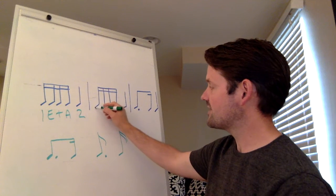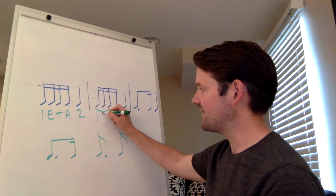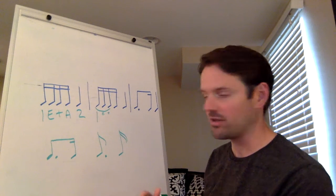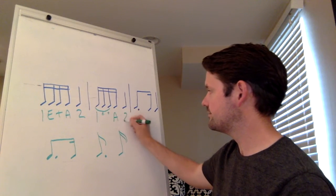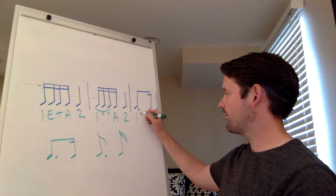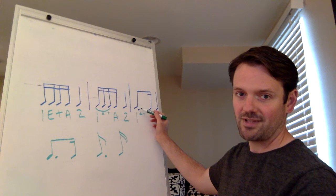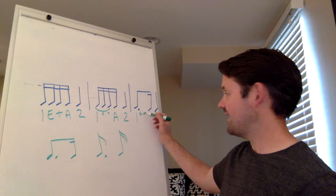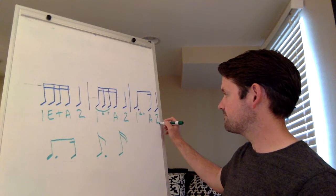If I were to tie the first three of those sixteenth notes together, we would have the one, but the e and the and would be small, because they're now a part of the one. The uh is large, and there's a two. It's normally written like this. The dotted quarter note has the three sixteenth notes as its three subdivisions. One, e, and, and then you say the uh, and you say two.